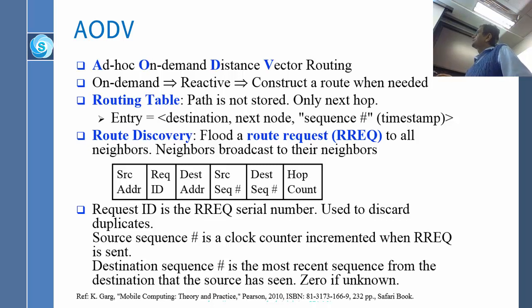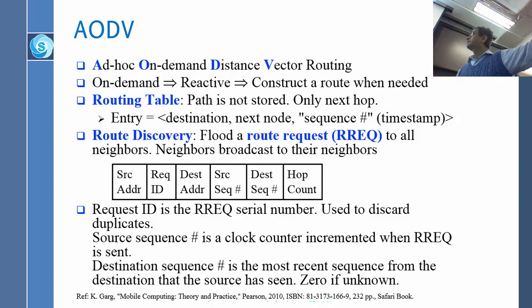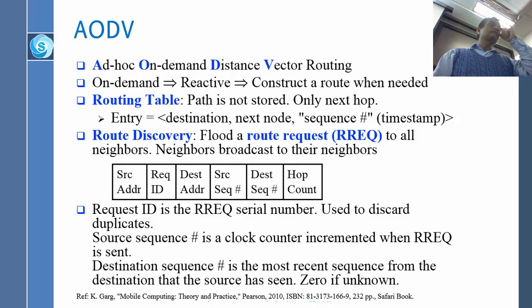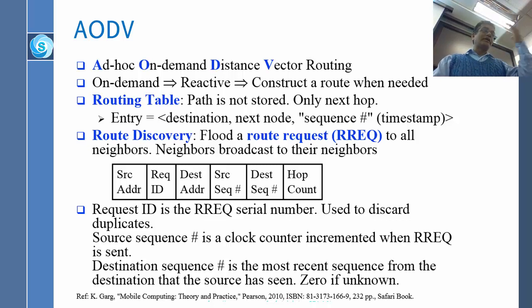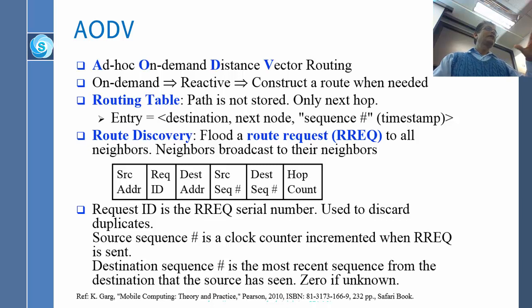The RREQ will have the source address, the destination address, the path to that address, and a RREQ ID — this is my request number 5. So next time when I want to know the path to the same thing, I will say request number 6, so you know this is not the old request, this is a new request. Every request I do, I increment the RREQ ID.